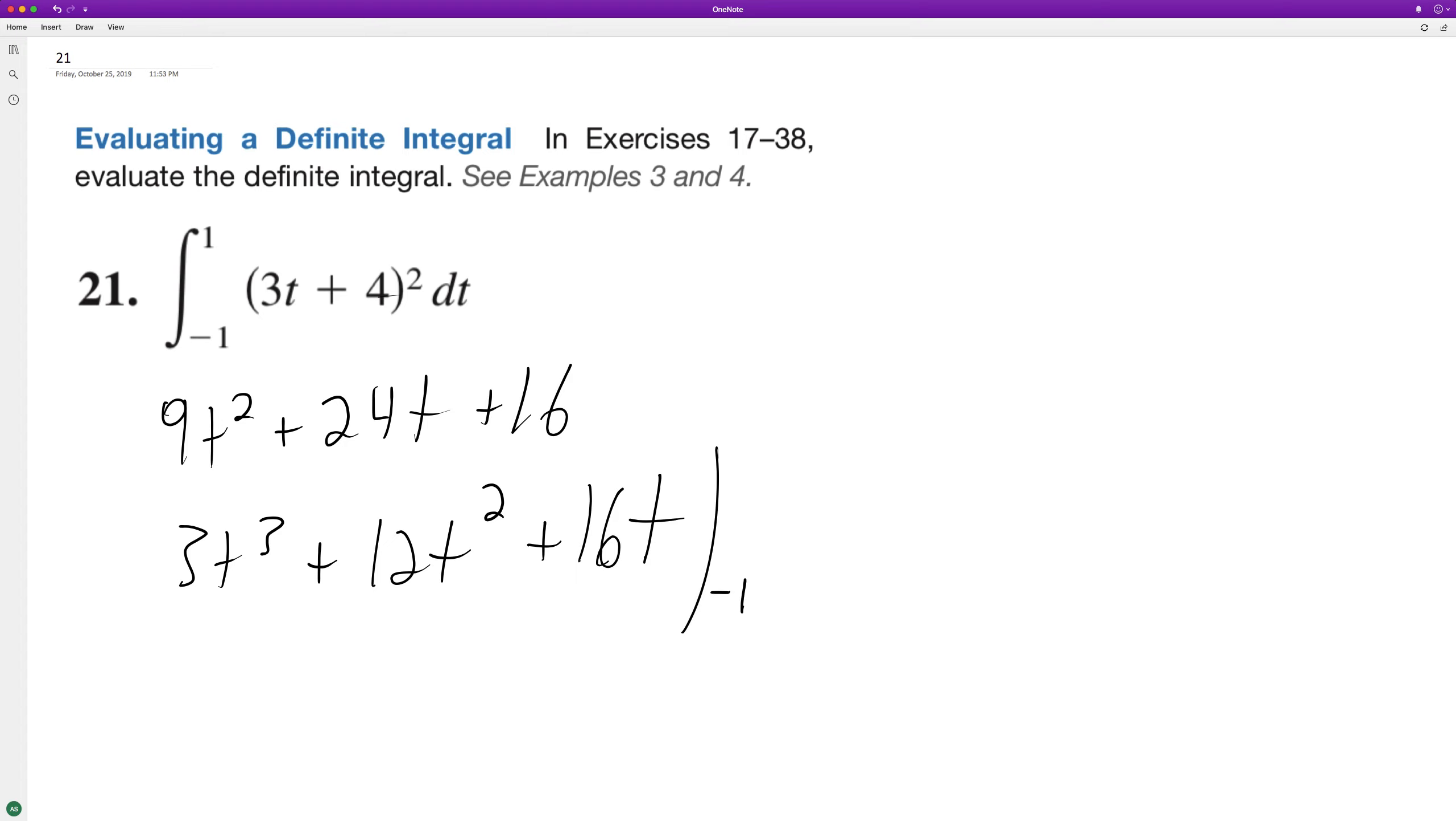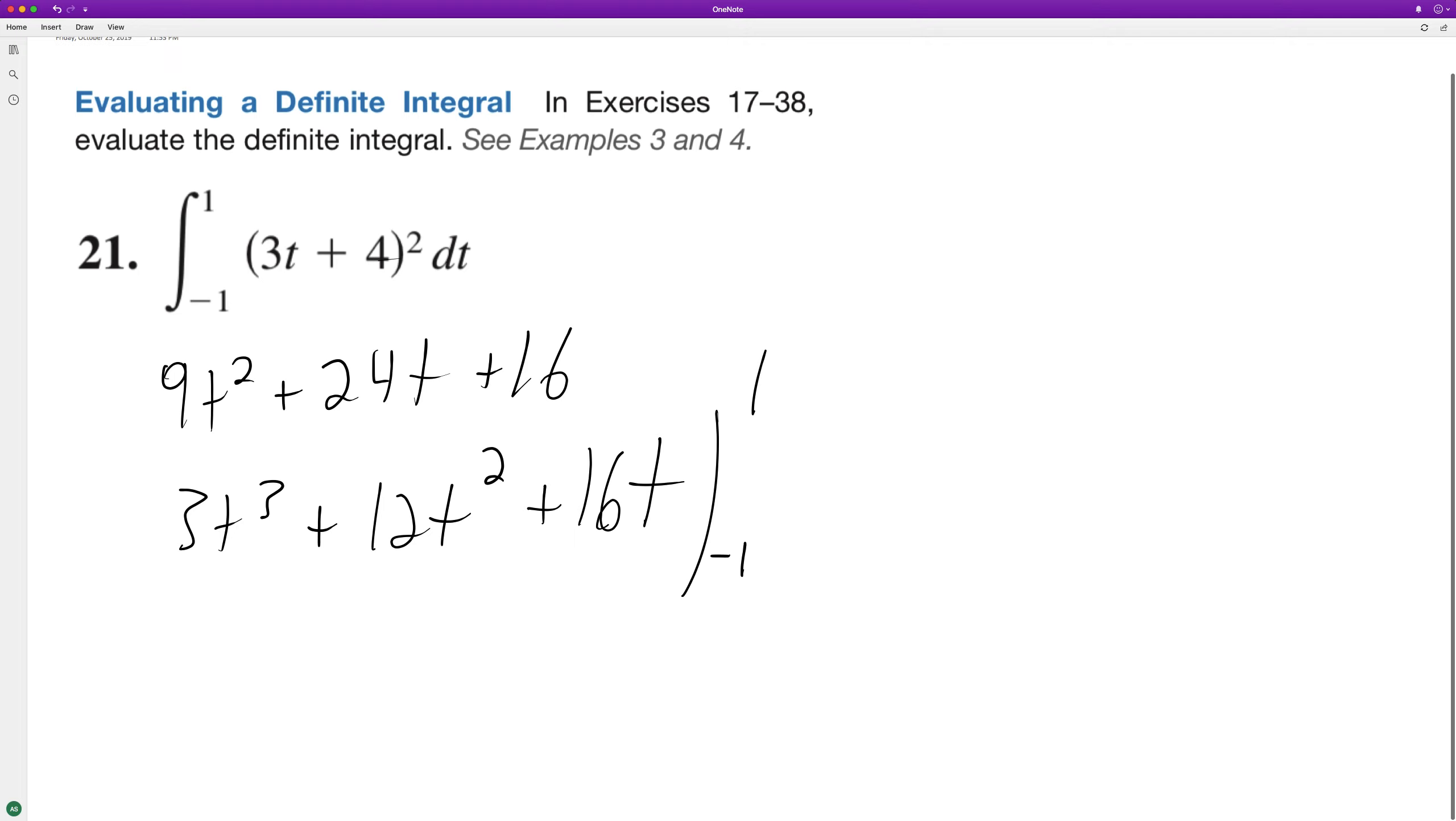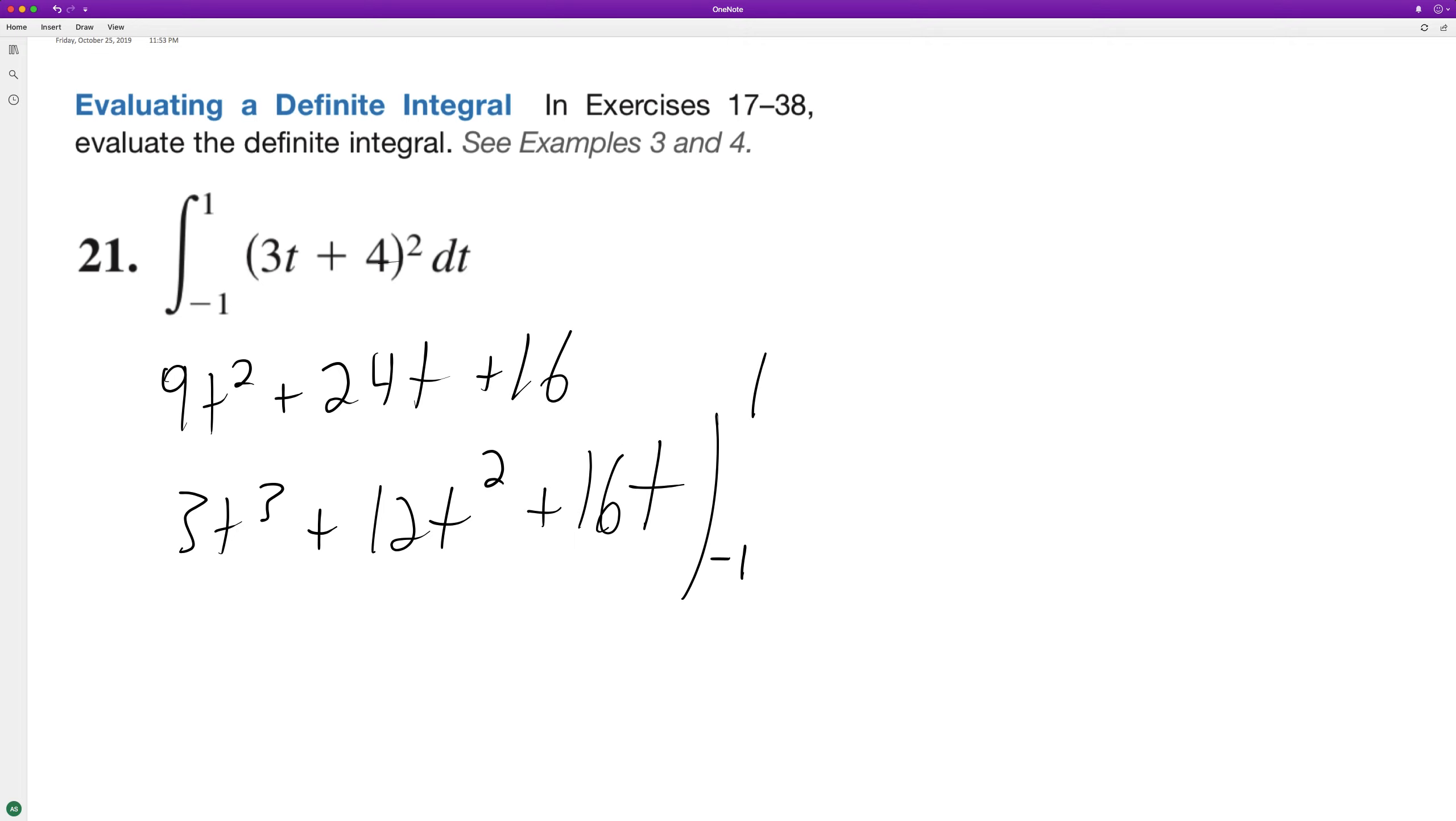And we're integrating this from negative 1 to 1. So when we do that, we get, we do the 3 times 1 cubed, which is just 1, plus 12 times 1 squared, plus 16 times 1,